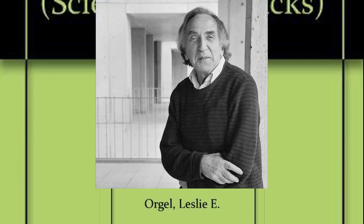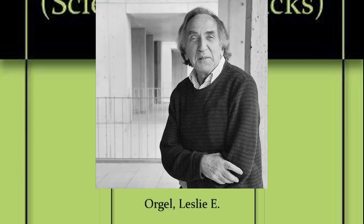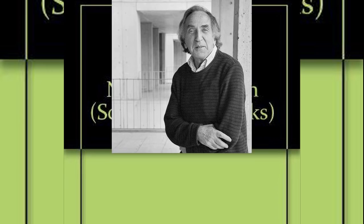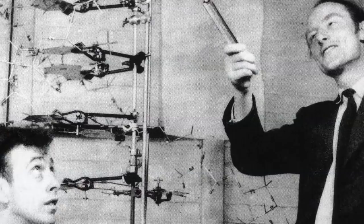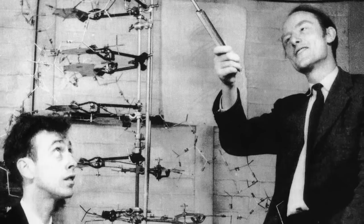The first printed appearance of the term specified complexity was in 1973 when Origins of Life researcher Leslie Orgel published The Origins of Life, Molecules and Natural Selection. Orgel had been very figurative in the development of studies in abiogenesis. He was one of the first people to ever view James Watson's and Francis Crick's image of the DNA helix.